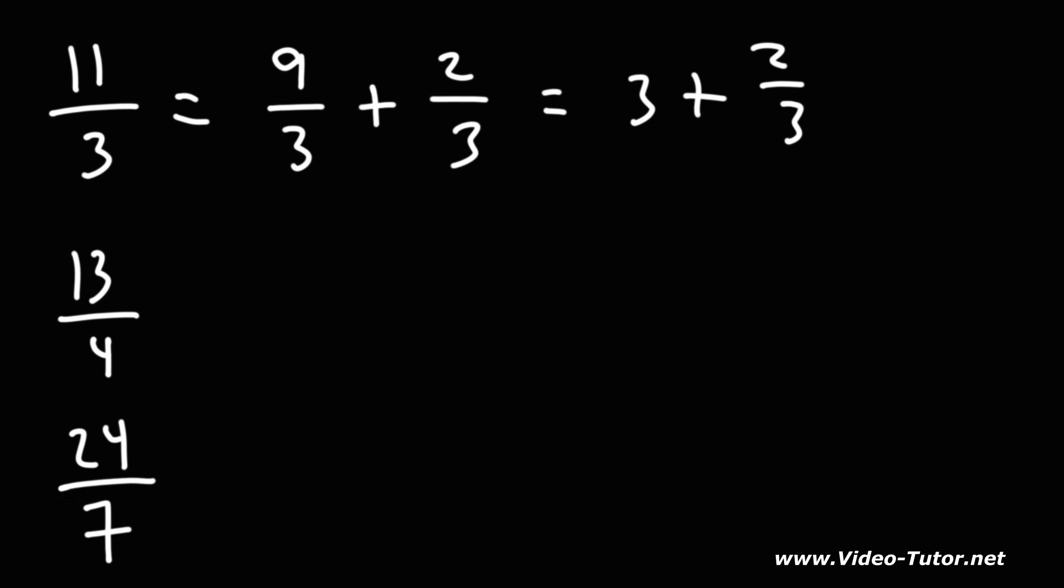So we have a whole number plus a fraction, which we can write as a mixed number, 3 and 2 thirds. So that's a quick and simple way of how you can write an improper fraction as a mixed number. Now, let's do the same thing for the next example.